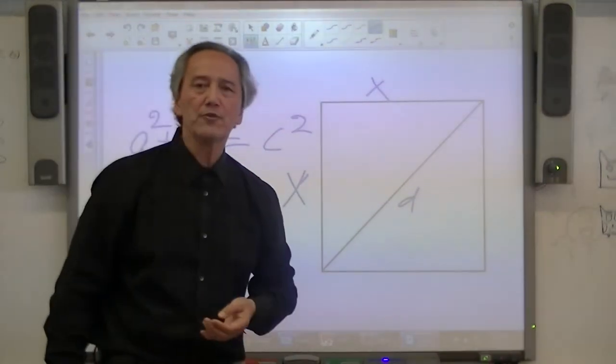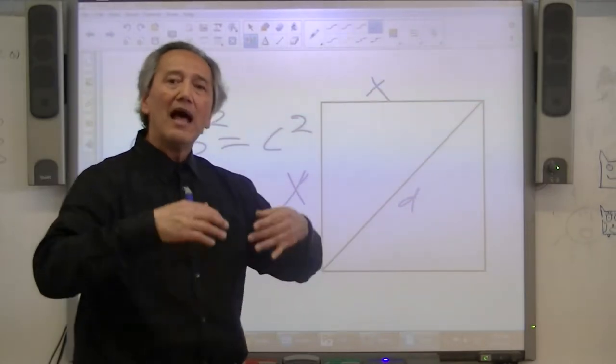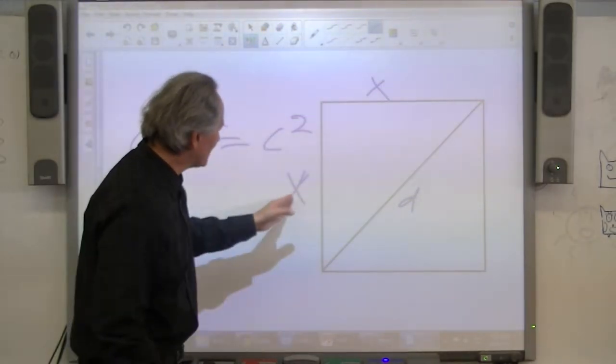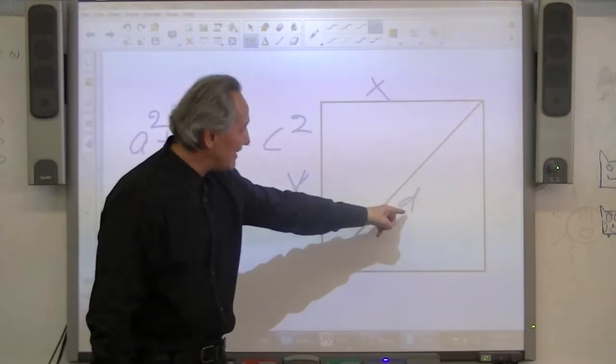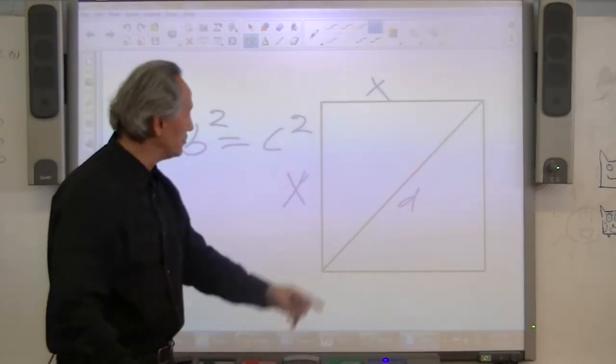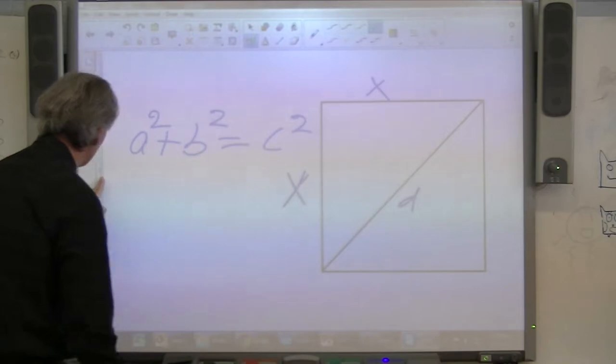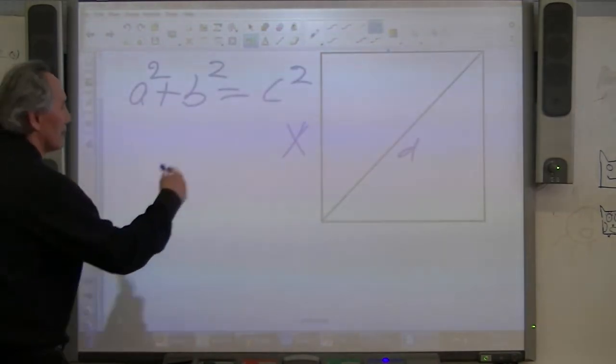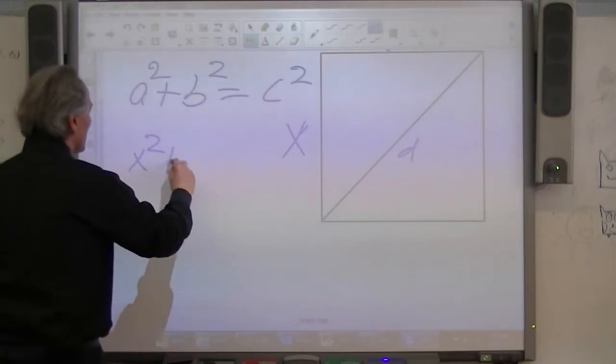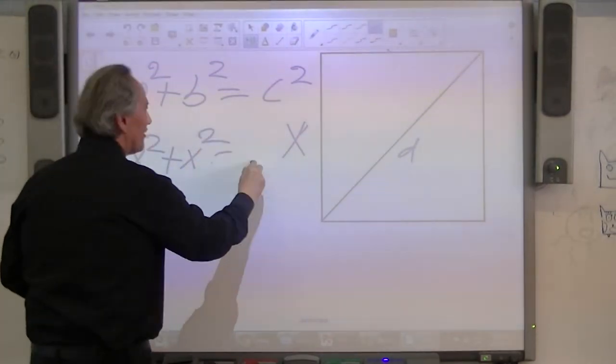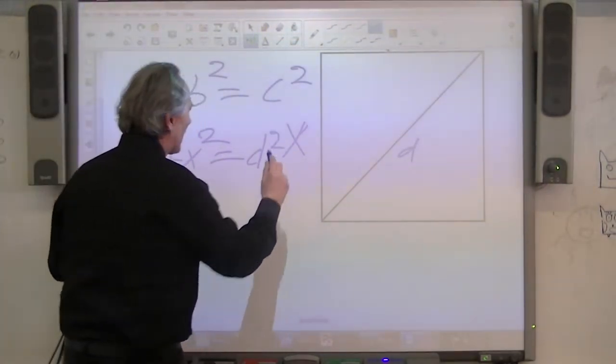Now let's go ahead and run through the algebraic proof, substituting X in terms of the sides A and B and D in terms of the hypotenuse C. So let's restate this: X squared plus X squared is in fact equal to D squared, my hypotenuse.